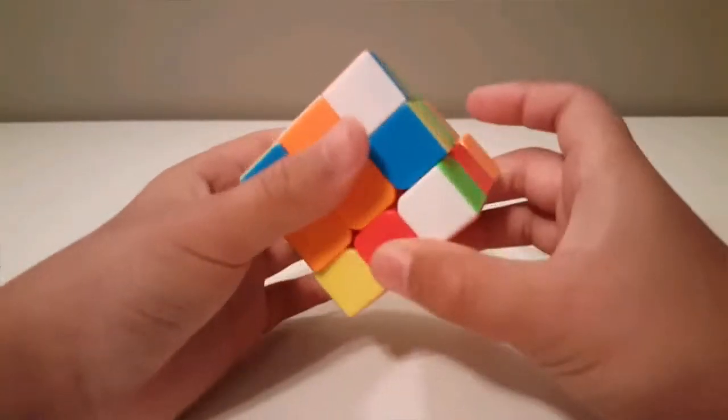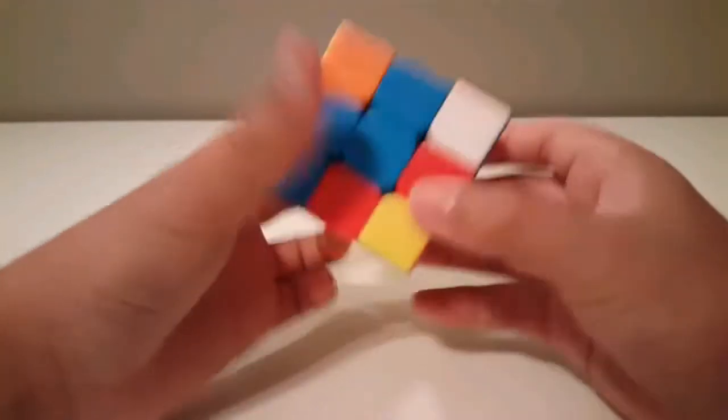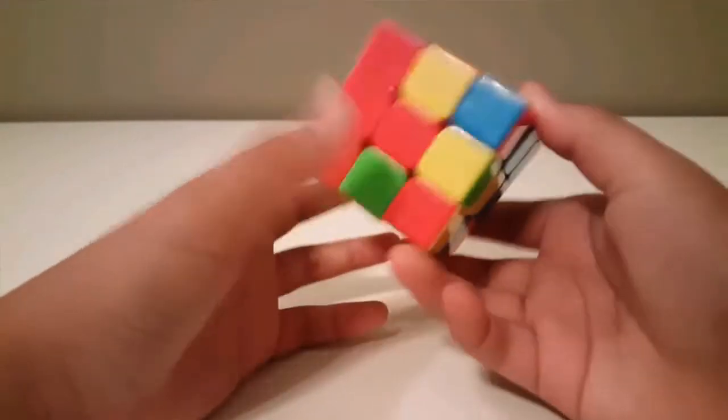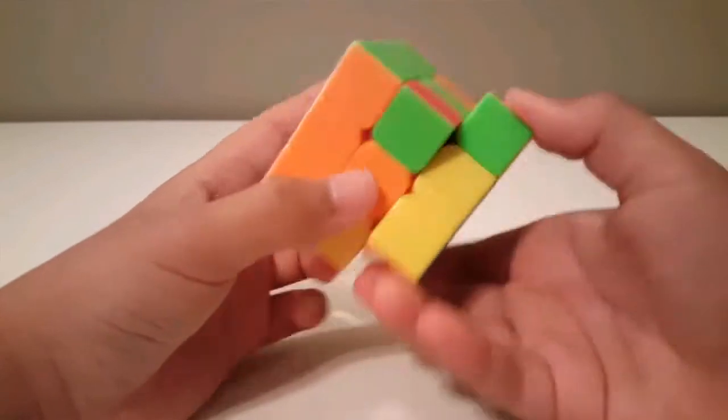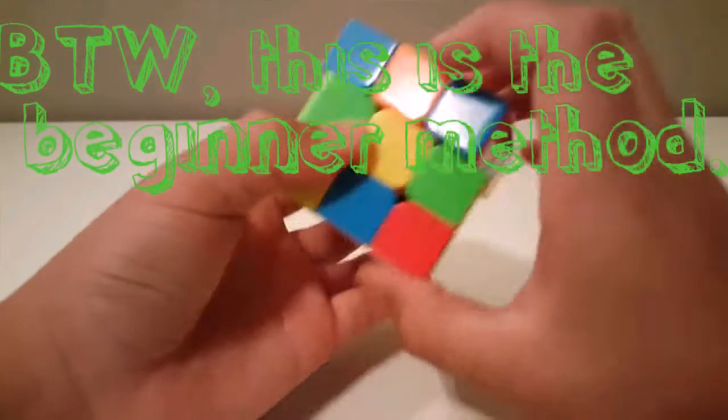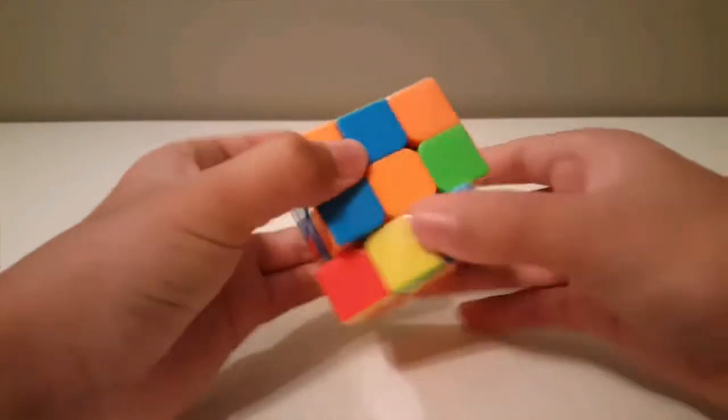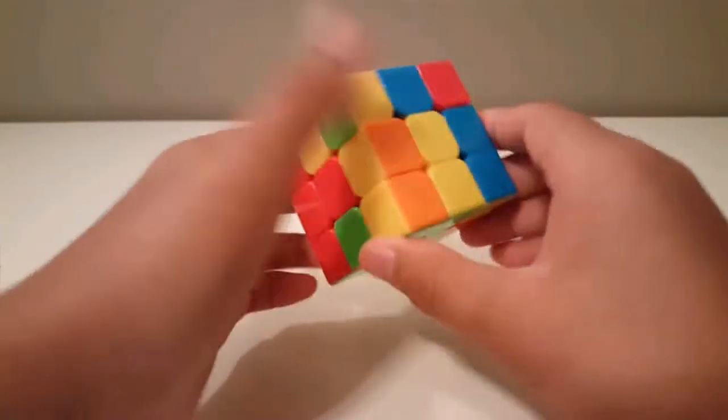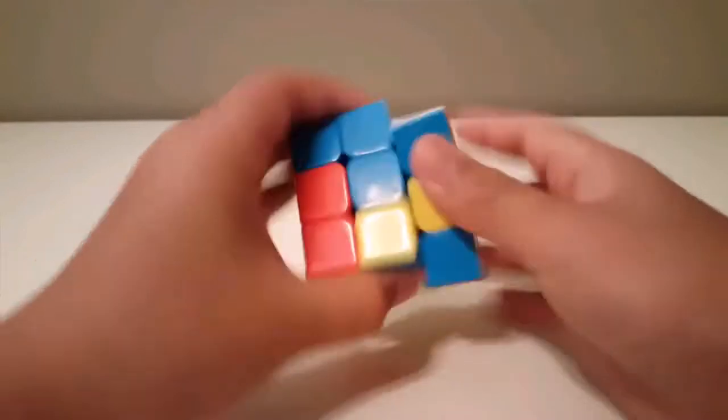I don't know why in this video I'm solving it so slow. Okay, but my high score solving the 3x3 cube with the actual finger timing is about 1 minute and 30 seconds. All right, that's not too bad, right?